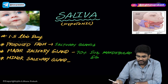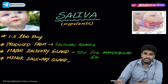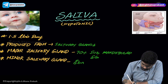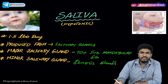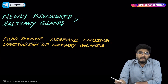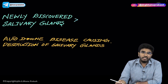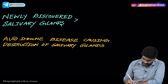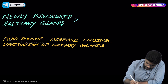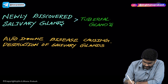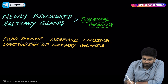Apart from these three major glands, there are many other salivary glands that are very small in number and size. These are called Ebner's glands — the minor salivary glands. There was also a new salivary gland discovered recently — this could be a question in your future exams. The newly discovered salivary glands are called tuberial glands.